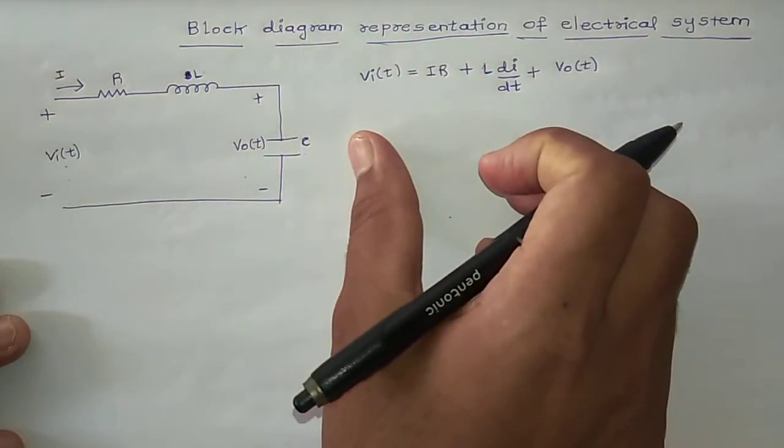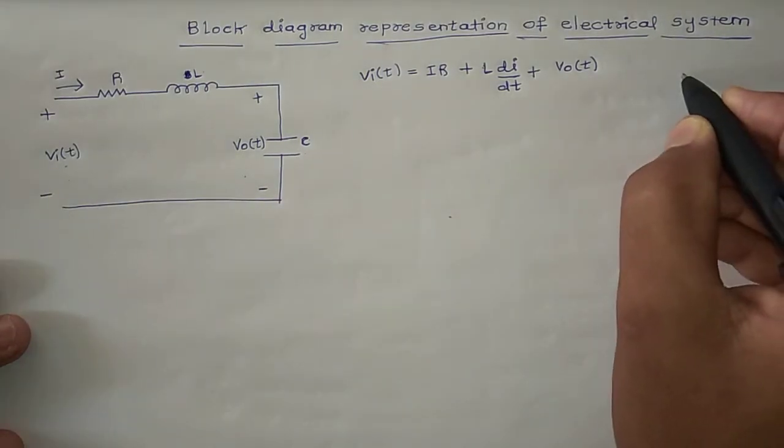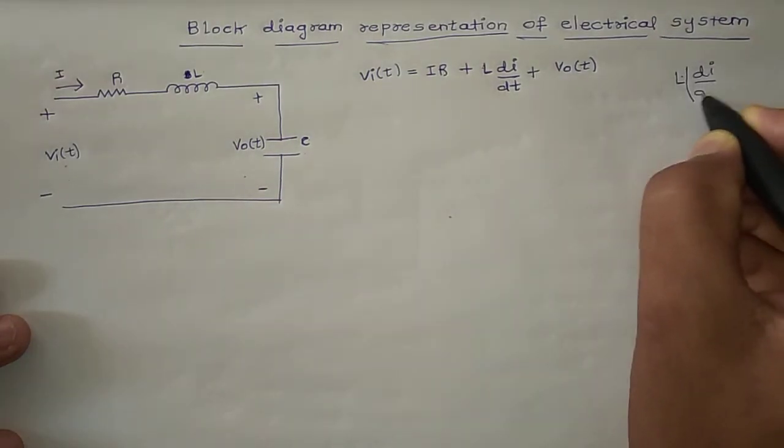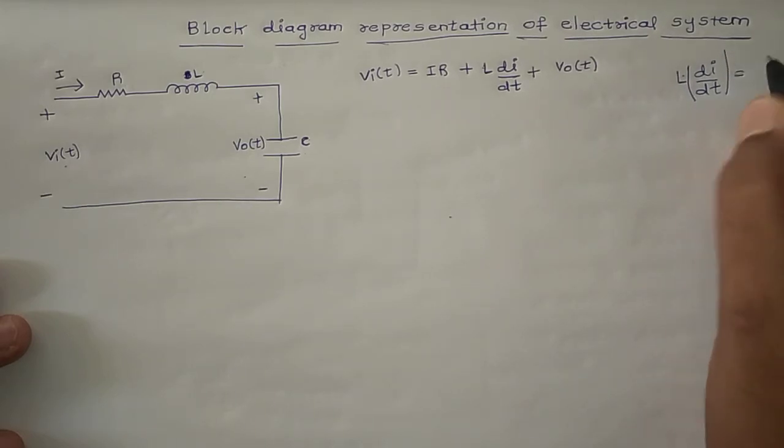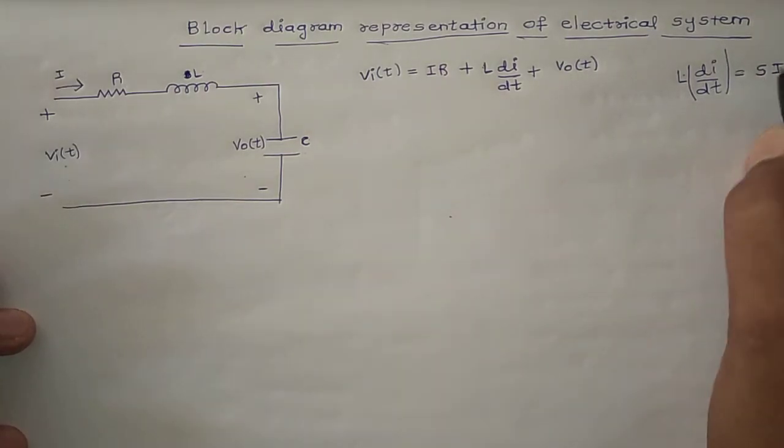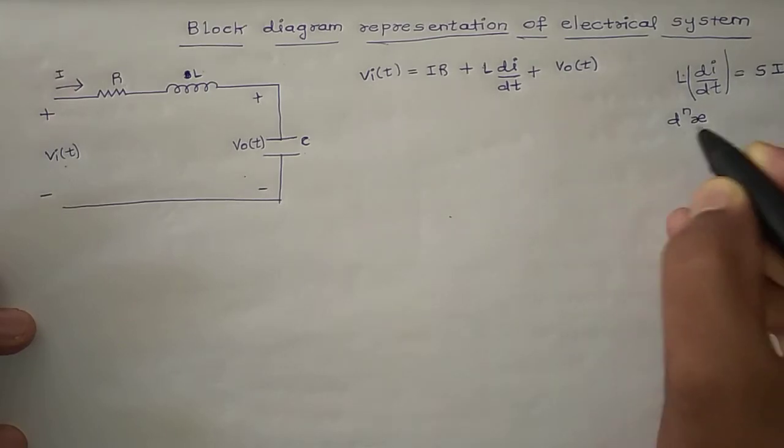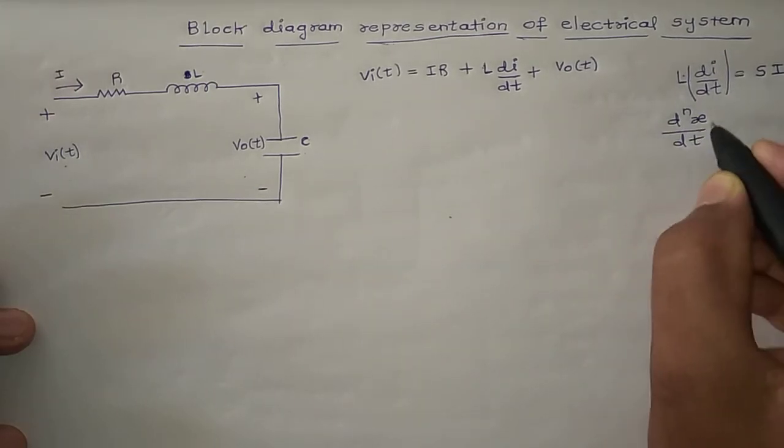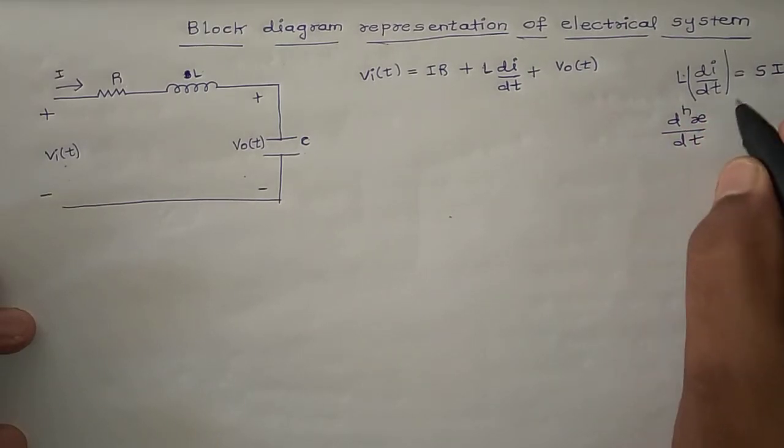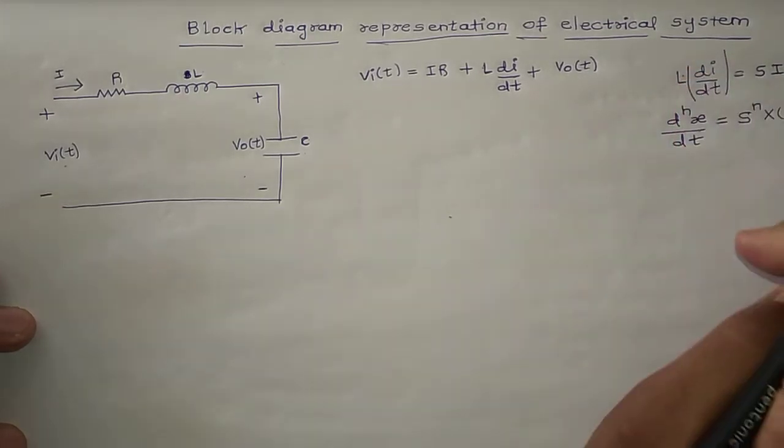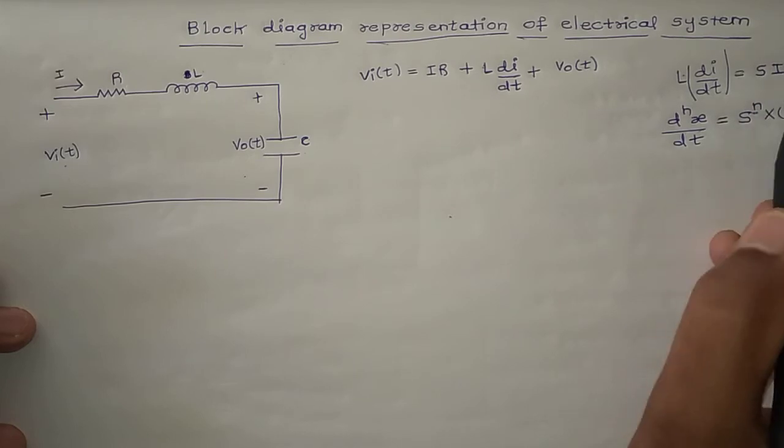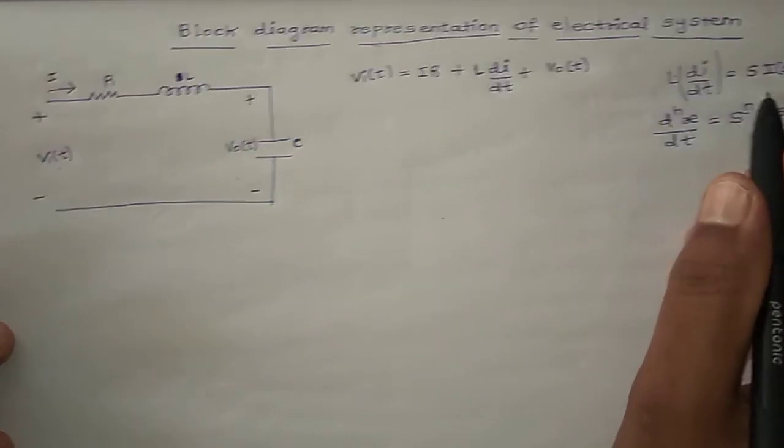So if you know, both sides Laplace transform apply. You should know that Laplace of di/dt equals s into i, or s into i(s). So if you don't know this particular form, dN/dt of any x with respect to time, this is nth differentiation. We can write this as s^n into x(s). Here, single differentiation, I made n as 1.